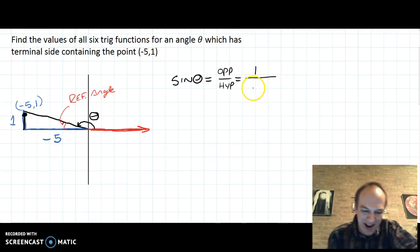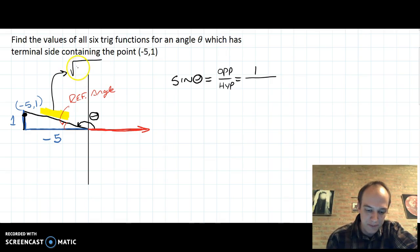Uh-oh, I don't know how to find the hypotenuse. Let's use the Pythagorean theorem instead. So I can find the hypotenuse by doing the square root of 1 squared plus (-5) squared. When you square that -5, the negative goes away. So this becomes the square root of 26.